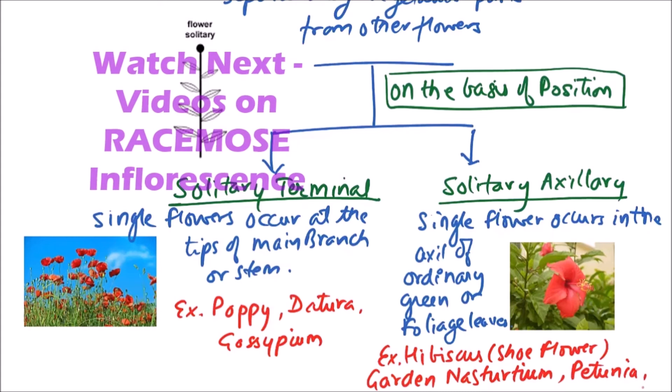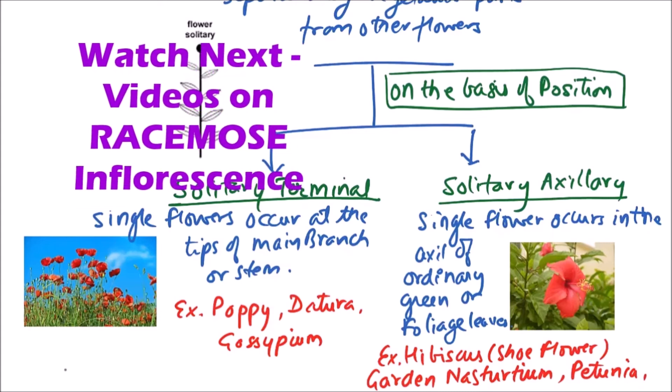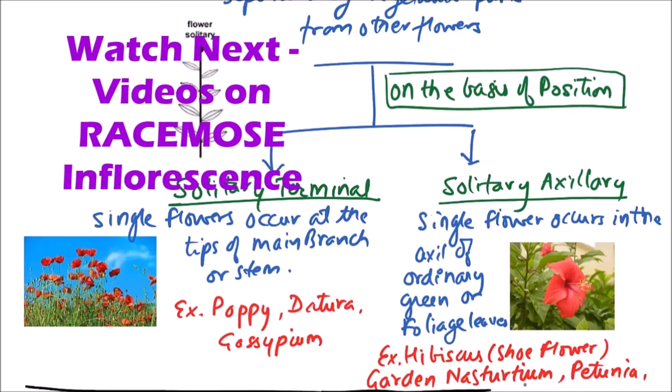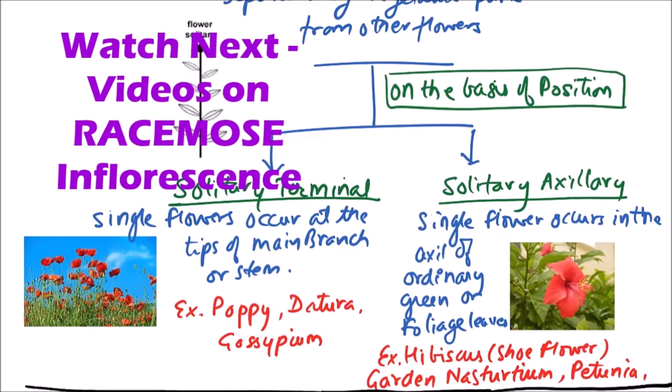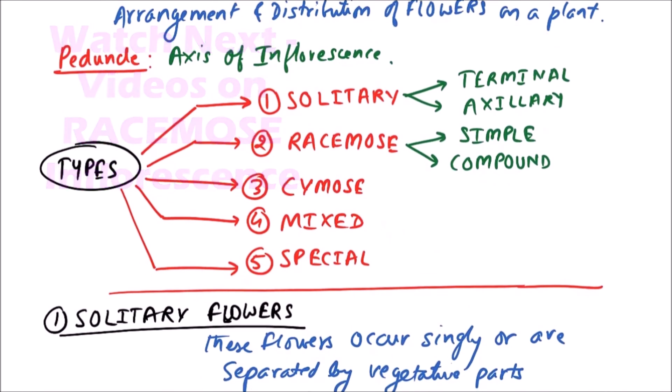Petunia, etc. So this is the solitary inflorescence. In the next video we will discuss the racimos type of inflorescence. Thanks for watching this video.